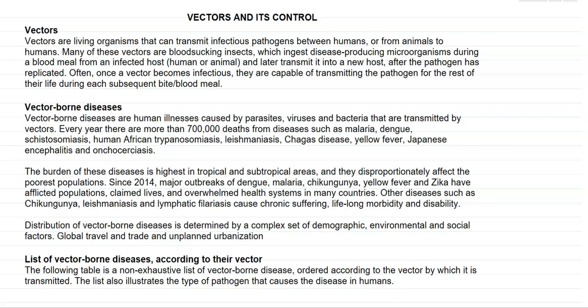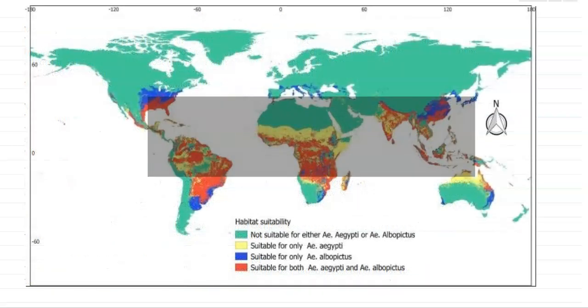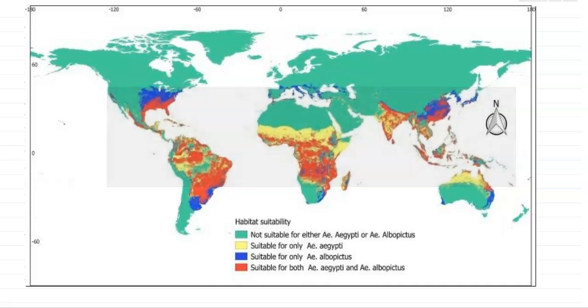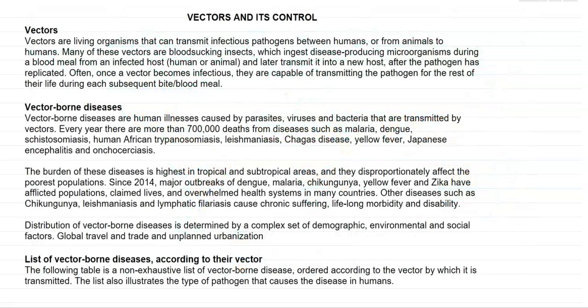The burden of these diseases is highest especially in tropical and subtropical areas and they disproportionately affect mainly the poorest populations. Since 2014, major outbreaks of dengue, malaria, chikungunya, yellow fever, and Zika virus have afflicted various populations residing in tropical and subtropical areas.